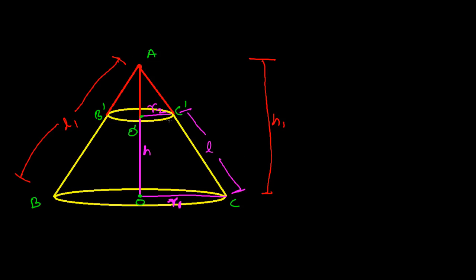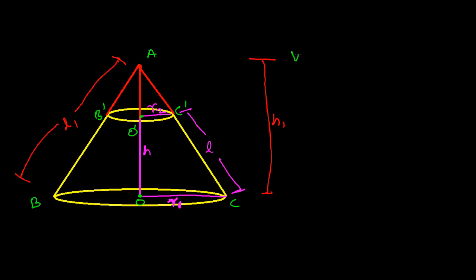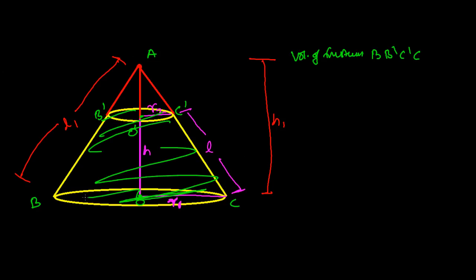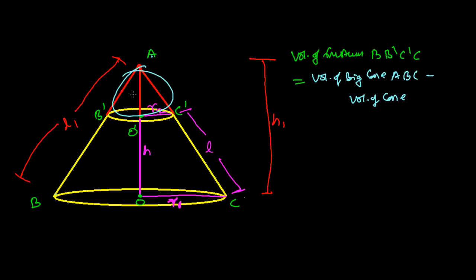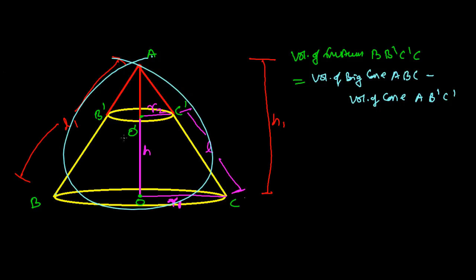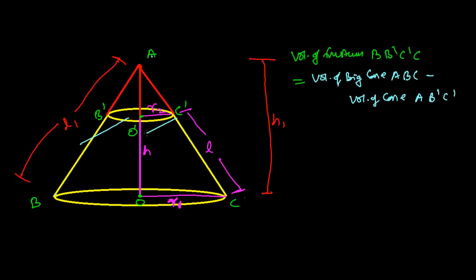To find the volume of this frustum region BB'C'C, we write: volume of frustum = volume of big cone ABC minus volume of smaller cone AB'C'. So the volume of the big cone minus the volume of the smaller cone gives the volume of the frustum.